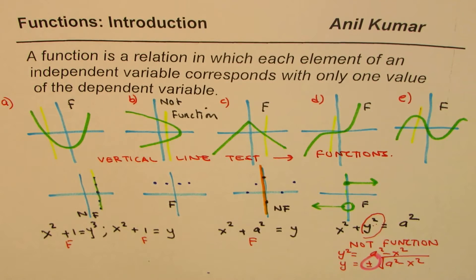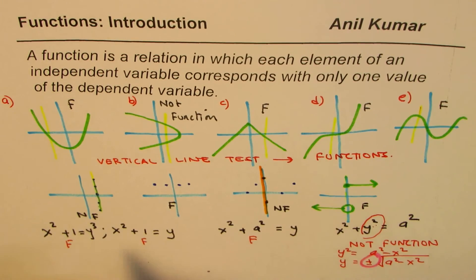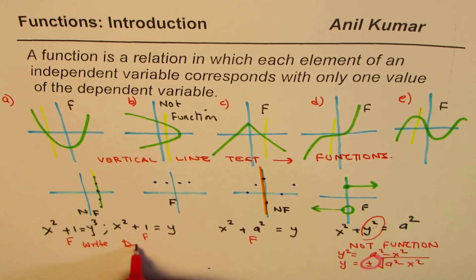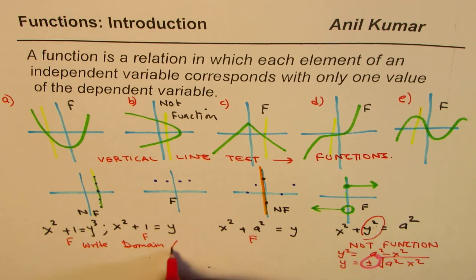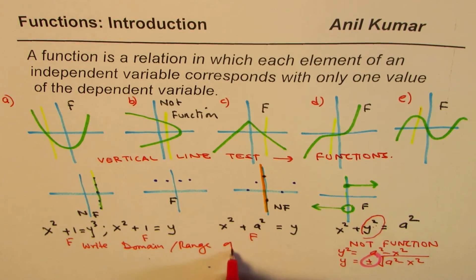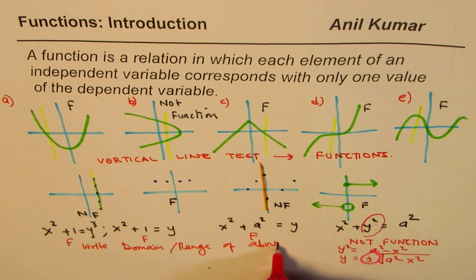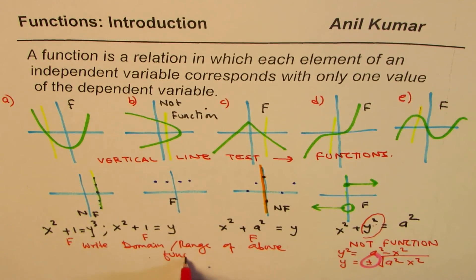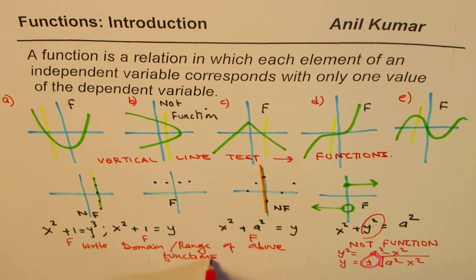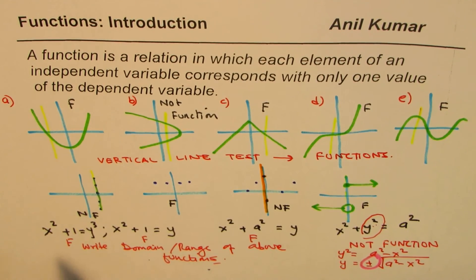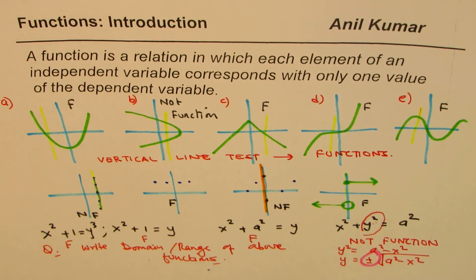So that is how we can figure out whether the given equation or graph is a function or not. You can use the vertical line test to check when the graph is given, and when given an equation, you should isolate y — if you get a unique value it is a function, and if y appears with a square (even power), it is not a function. As an exercise, write the domain and range of the above functions only, discarding the relations which are not functions. I'm Anil Kumar, and I hope you liked it. Thank you, and all the best.